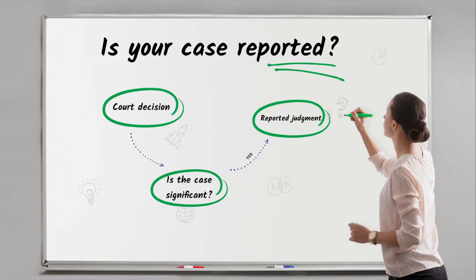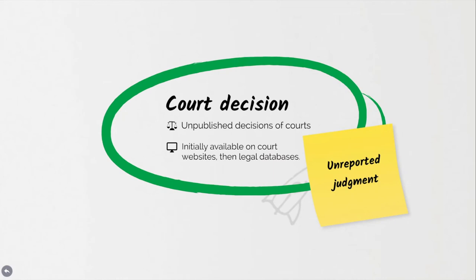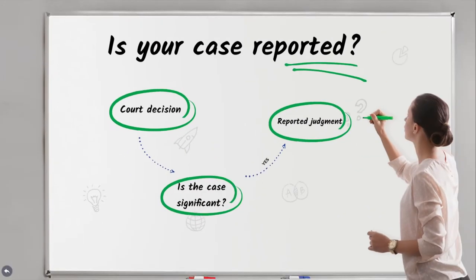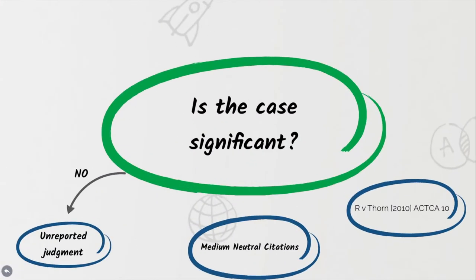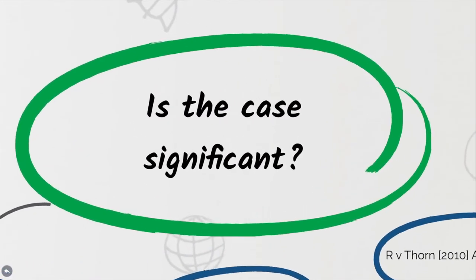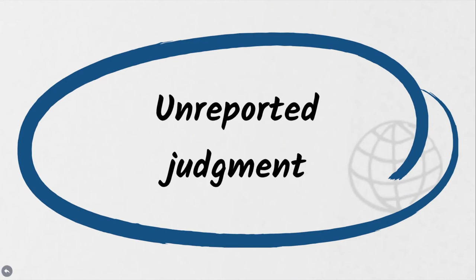When a judgement is delivered for a case in court, a version of the decision may be made available online — initially on the court's website and then in legal databases. This is what is known as an unreported judgement. Yet not every judgement will then go on to be published. Cases which do not involve any new or significant point of law will remain as unreported judgements.